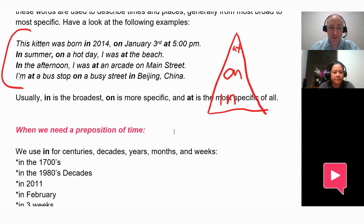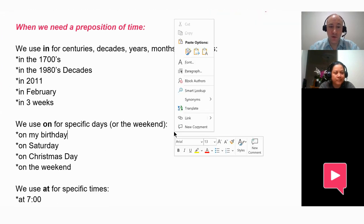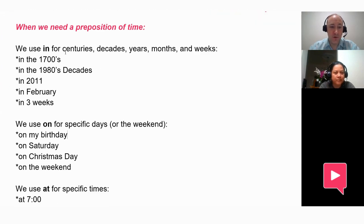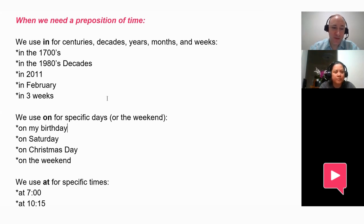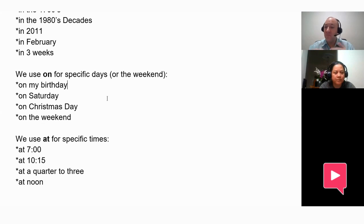Let's continue with prepositions of time. We use in for centuries, decades, years, months, and weeks. So in the 1700s, in the 1980s for a decade, in February, in 2011, in three weeks. Next, we use on for specific days. So I would say on my birthday, on Saturday, on August 12th, on Christmas Day. We also use on for the weekend.